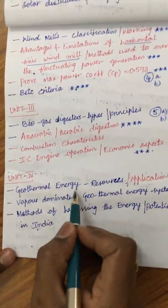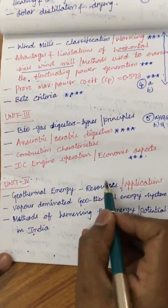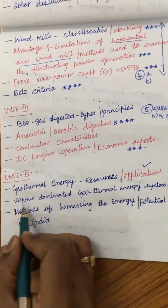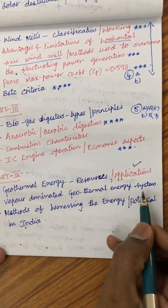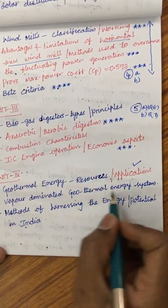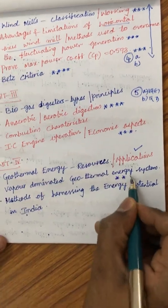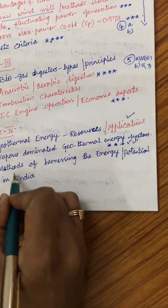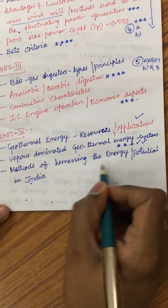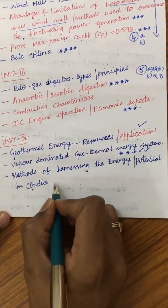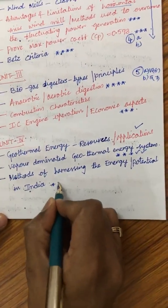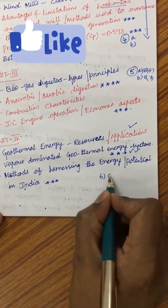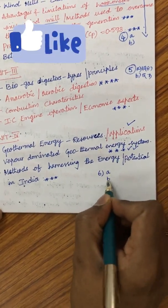Unit 4 is all about geothermal energy — its resources, different applications, and vapor-dominated geothermal energy systems, which is one of the most expected questions asked several times in previous papers. The methods of harnessing geothermal energy and its potential in India may appear as a 7-mark question in question 6A or 6B.